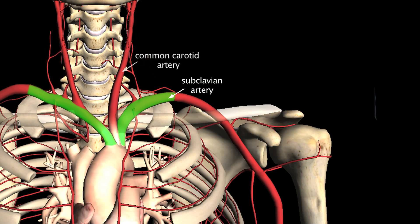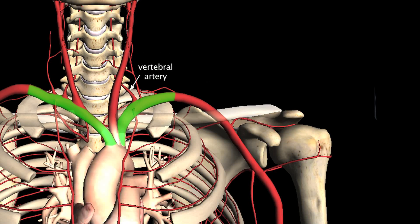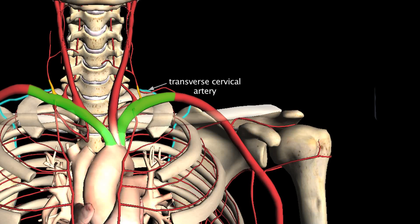The larger vessels here are the common carotid arteries. The first small branch is the vertebral artery, which runs through the transverse foramen of the cervical vertebrae up to the head, and the second branch is the thyrocervical trunk. All three of these typically show up medial to the anterior scalene muscle. Branching off the thyrocervical trunk is the transverse cervical artery, which courses along the medial border of the scapula.